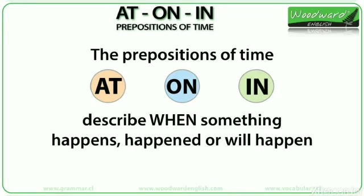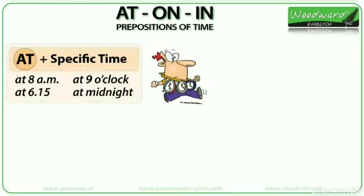The prepositions of time — at, on, and in — describe when something happens, happened, or will happen. What is the difference between at, on, and in? At is used for a specific time or hour of the day.